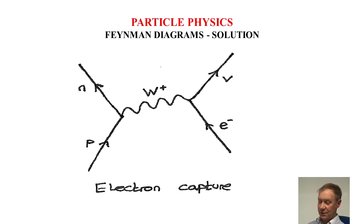And as we proceed to the right, the electron comes in and the antineutrino goes off.